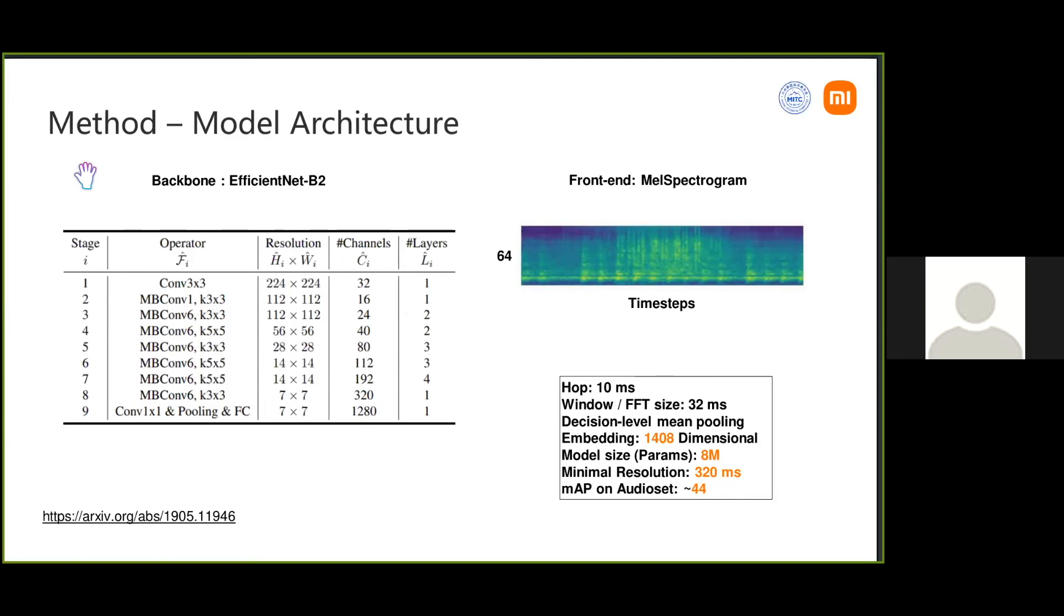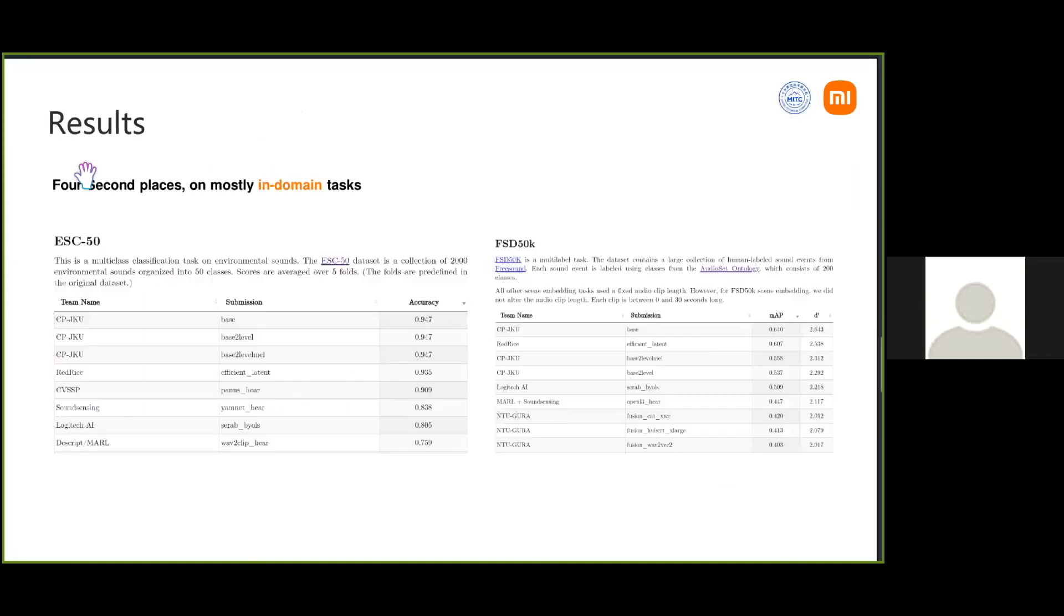For the results, I got four times second place, which for me was not surprising. Three of them were completely in-domain, so ESC-50 and FSD50K are in-domain tasks for my model, so it should perform pretty good. But for one other task, CREMA-D, I also got second place, which was emotion detection, which is a bit surprising to me because I don't think that weakly labeled tagging of sound events has much to do with emotion.